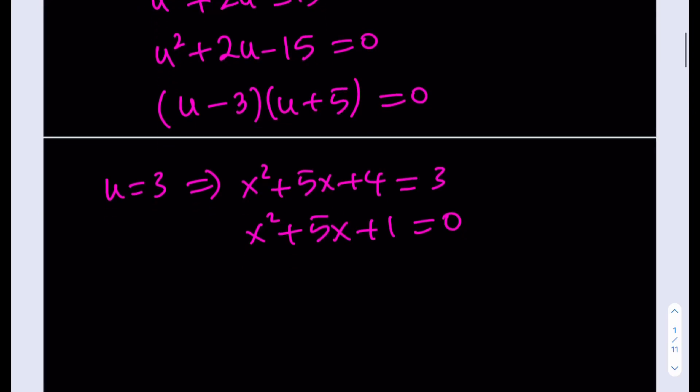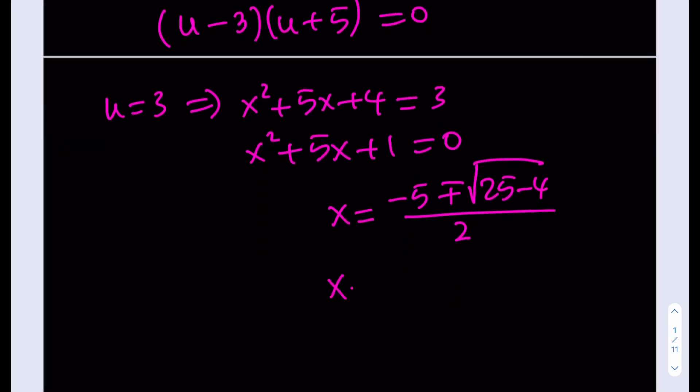from here, we're going to be getting two solutions. And those solutions are going to be (-b ± √(b² - 4ac)) / 2a. And from here, the x values are going to be (-5 ± √21) / 2. So those are going to be two of the solutions.